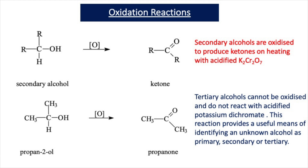When it comes to a tertiary alcohol — one that has three alkyl groups attached to the carbon next to the OH — they do not undergo oxidation reactions at all. This is an important difference between tertiary and primary or secondary alcohols. If you had an unknown alcohol and wanted to identify whether it's primary, secondary, or tertiary: if you heated it with acidified potassium dichromate and no colour change took place, you would know you had a tertiary alcohol, because tertiary alcohols cannot be oxidised with acidified potassium dichromate or acidified potassium permanganate.